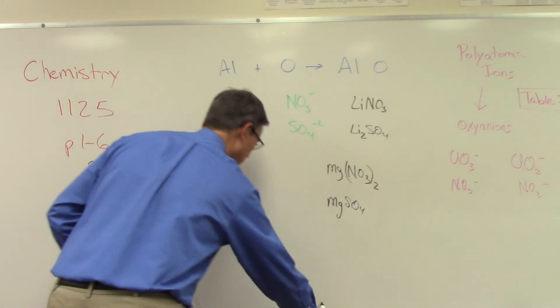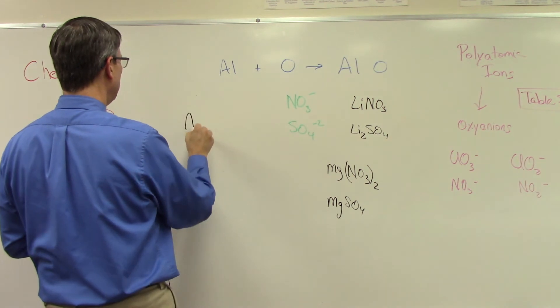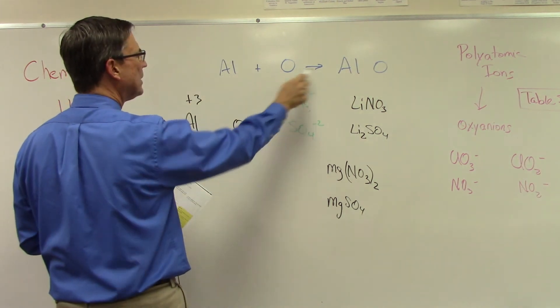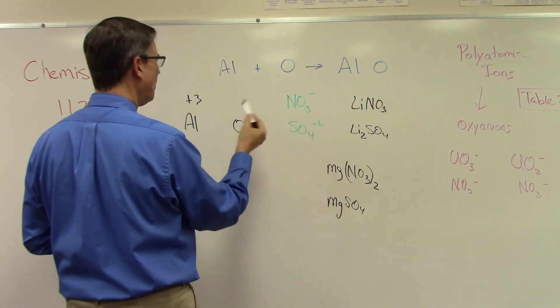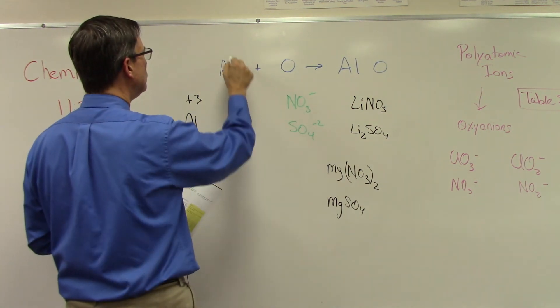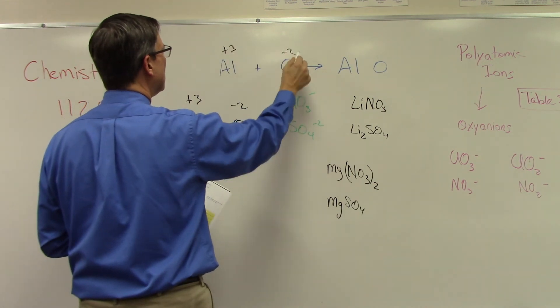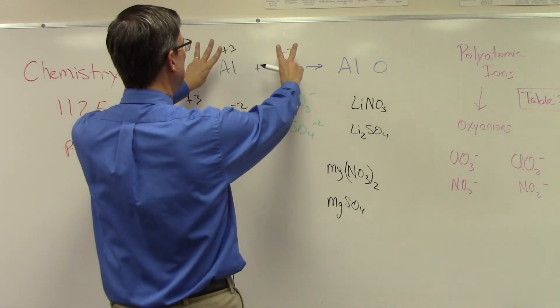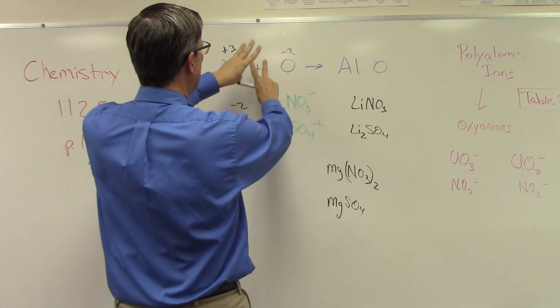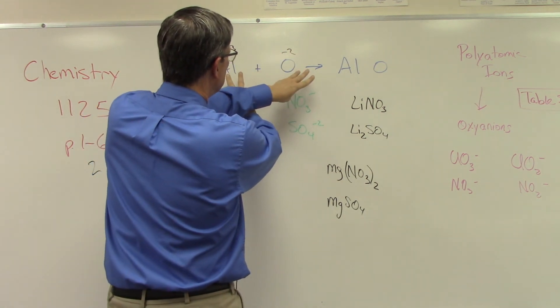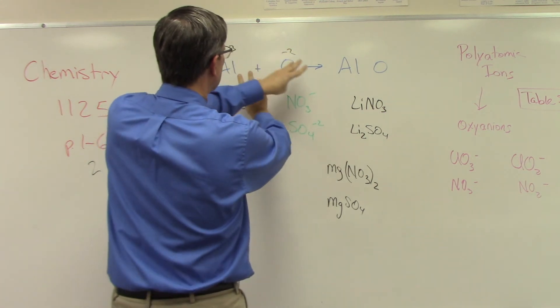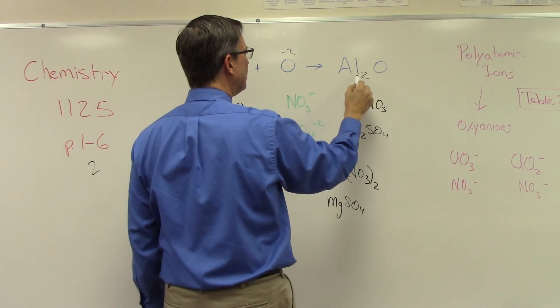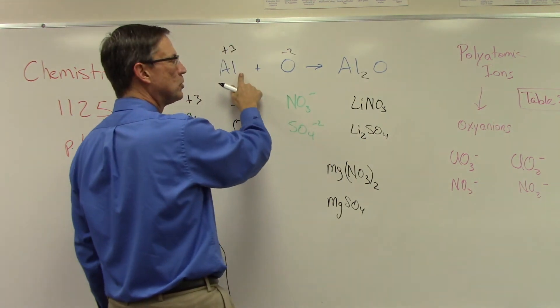I'm going to erase that. And they have aluminum which has a positive three charge. Oxygen, I guess I wrote that up here. That's what I was starting to do. I said, well I knew I wrote that down somewhere. Oxygen is a negative two charge. So positive three, negative two. If that's the charge, the crossover method says I take those charges and I go like this, boom, and those become the subscripts.